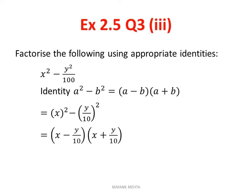Then factorize the following using appropriate identity again. x² - y²/100. Here also look, x² minus (y/10)². You can divide it into two factors using (a-b)(a+b). (x - y/10)(x + y/10).